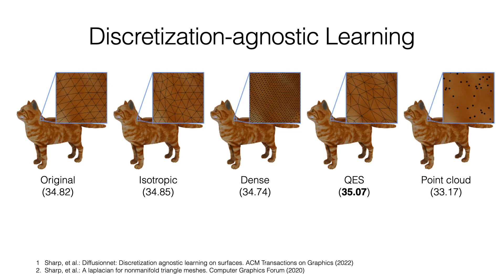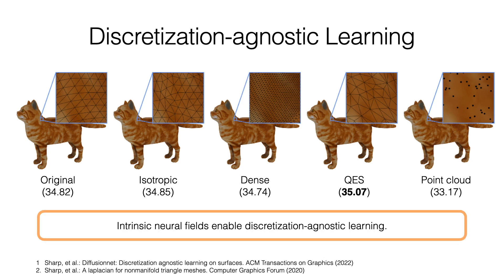More interestingly, we can reconstruct textures from the same images for different discretizations of the shape. We use the discretization strategies proposed by Sharp et al. The results are of high quality for all studied discretizations.